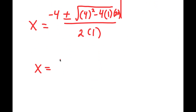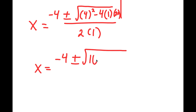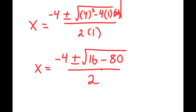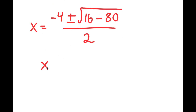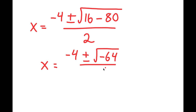This is equal to negative 4 plus or minus the square root of 4 squared, which is 16, minus 4 times 20, which is 80, over 2 times 1, which is 2. This simplifies to negative 4 plus or minus the square root of negative 64, over 2.